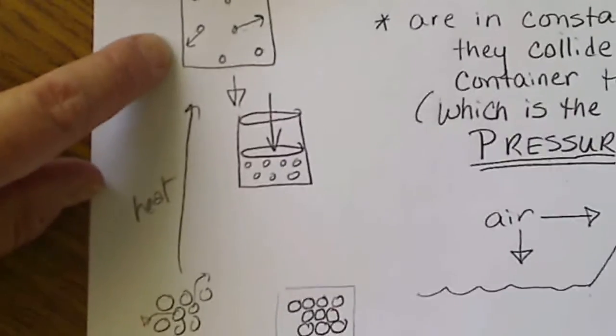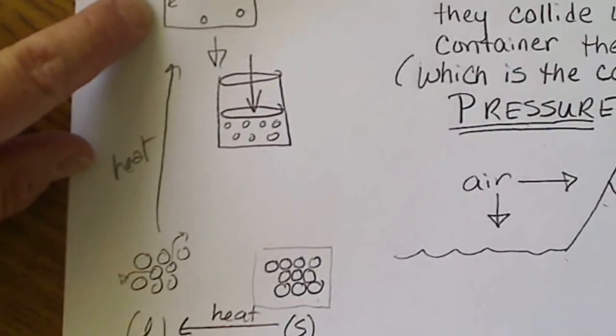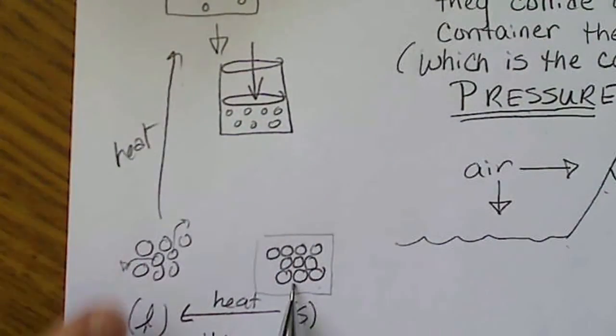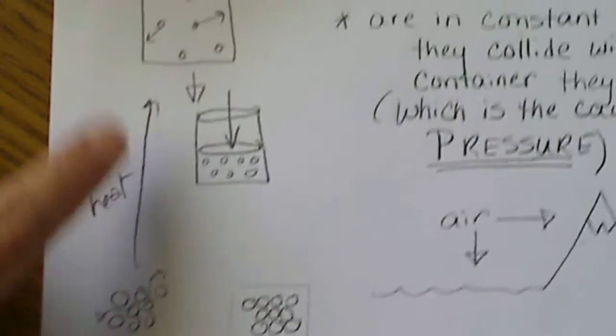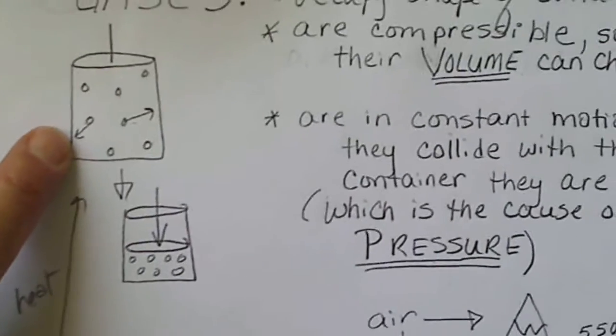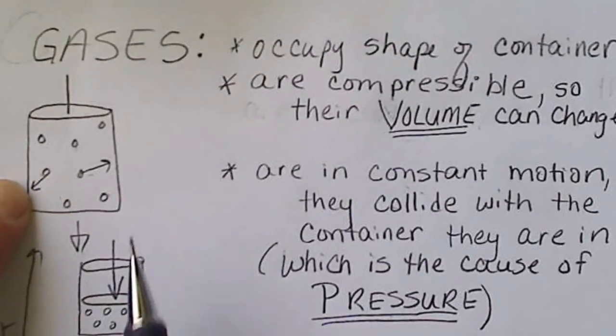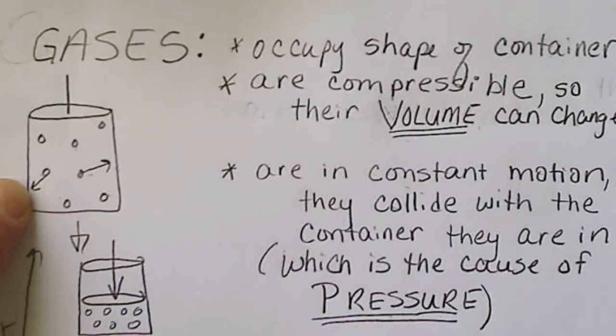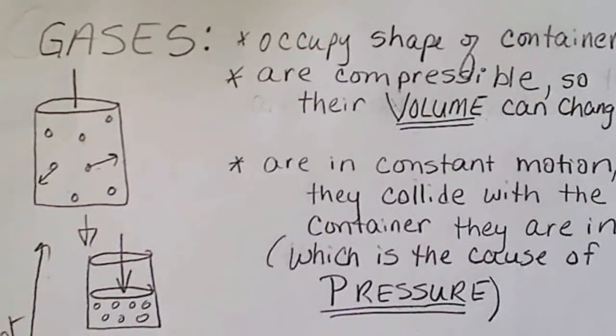When we measure out a liquid or a solid, we can just weigh it on the balance. The way to measure a gas is not by putting it on a scale and weighing it, but the way we measure how much gas we have is talking about the pressure, volume, or temperature.